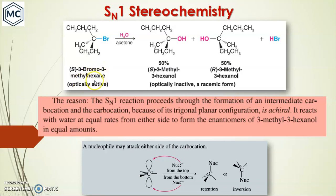This is clear from the example: reacting (S)-3-bromo-3-methylhexane, an optically active compound, via SN1 gives 50% (S)-3-methyl-3-hexanol and 50% (R)-3-methyl-3-hexanol. Each enantiomer is individually optically active, but the mixture is optically inactive (a racemate). The planar carbocation intermediate can be attacked from the top or bottom with equal probability, giving retention in some cases and inversion in others — this is the stereochemistry of the SN1 reaction.